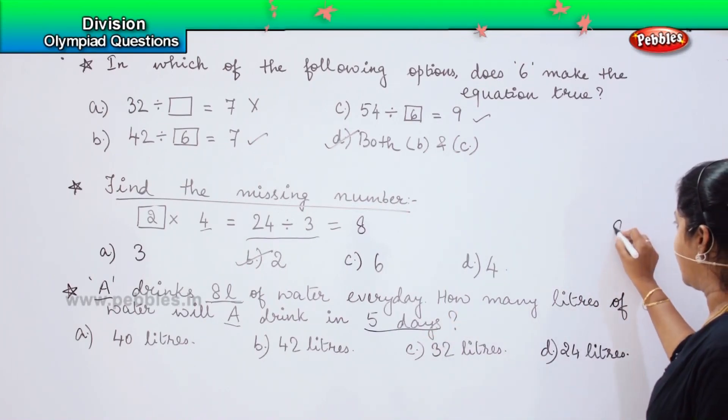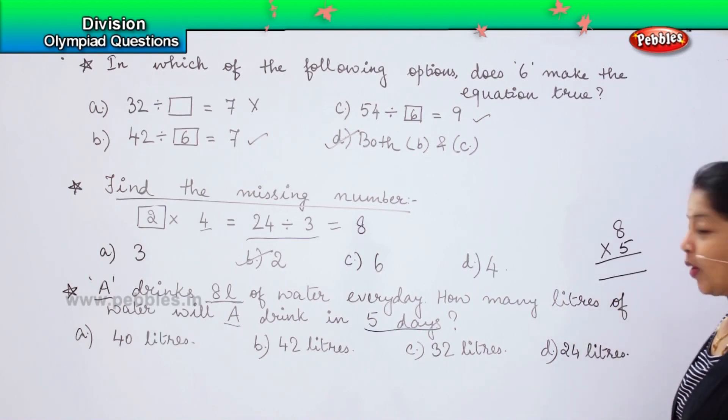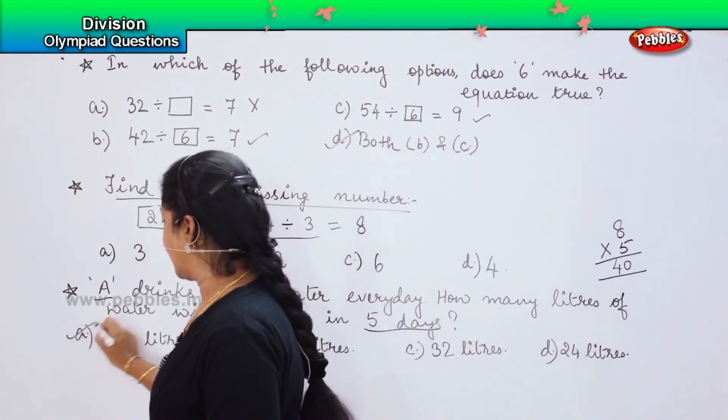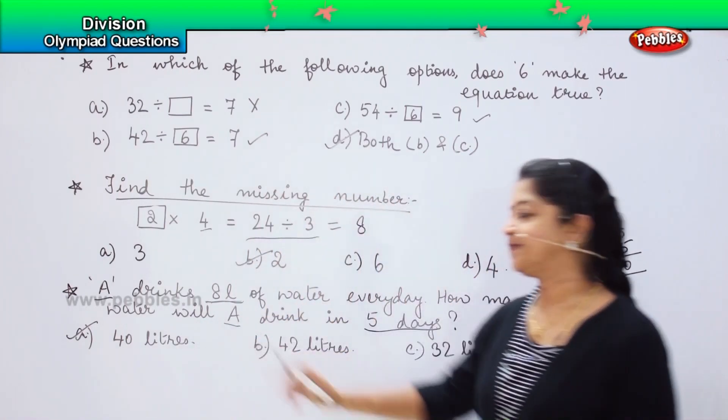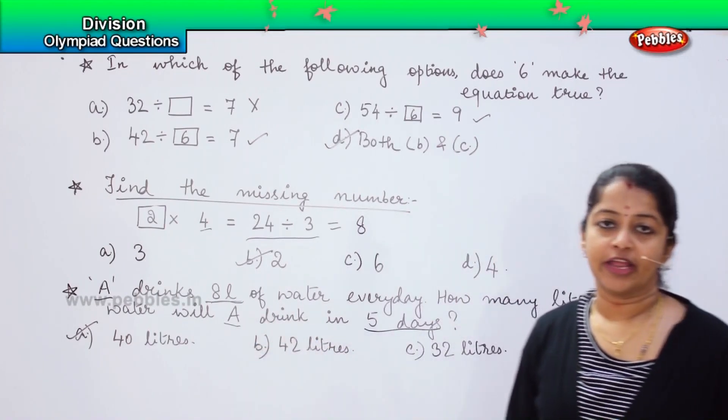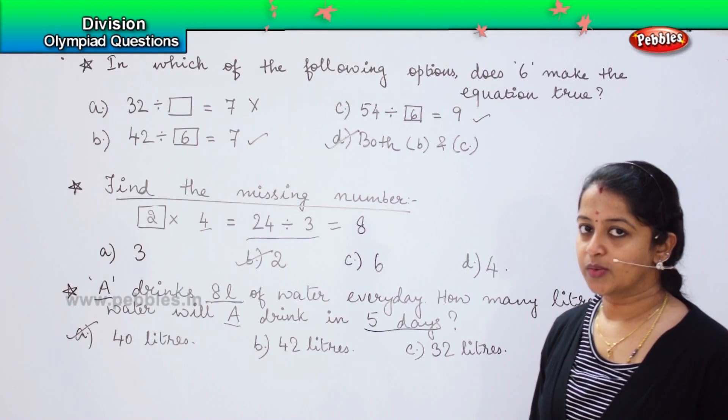Here it is asking that in one day if A drinks 8 litres, how much will he drink in 5 days? Which means that we need to multiply. Here we will not do the division, we will do the multiplication. 8 into 5. What is 8 into 5? Very good. It is 40. Where is 40 here? Yes. It is option A. Your right answer is 40 litres. A will drink 40 litres in 5 days. Is it clear? Shall we do the next question?